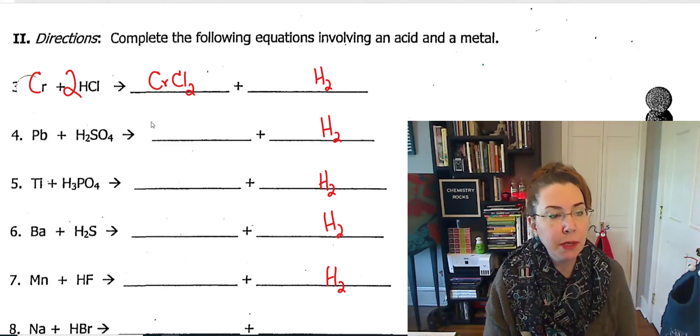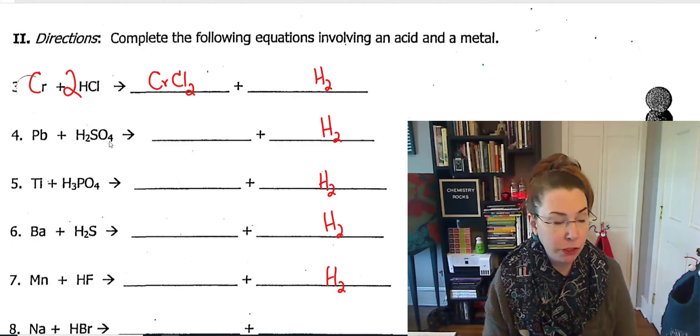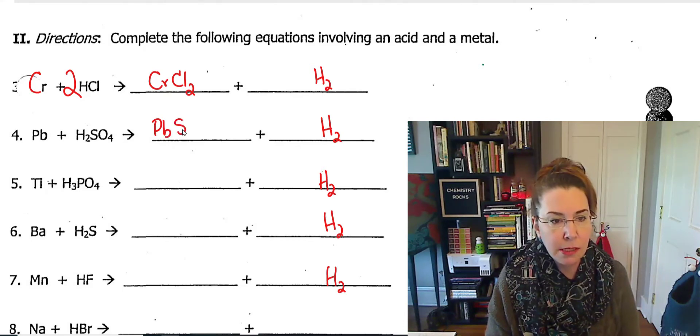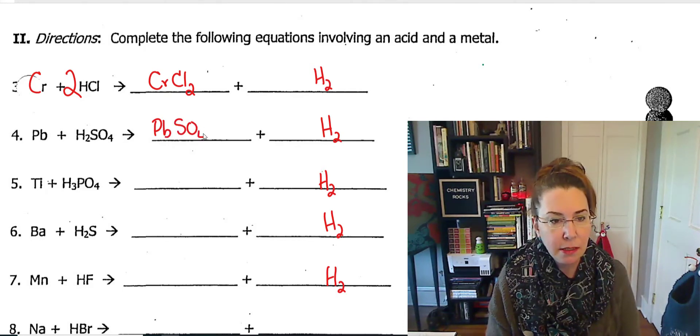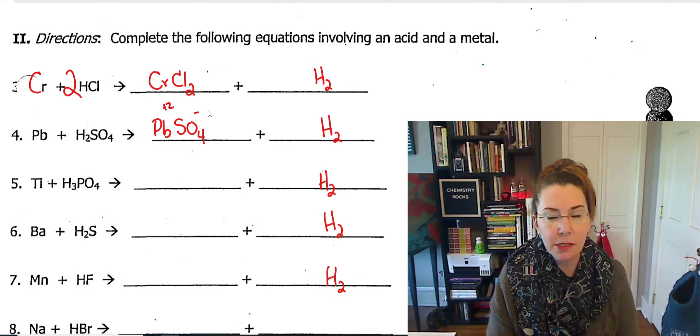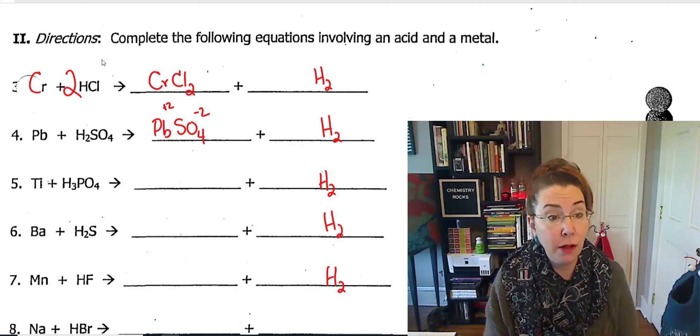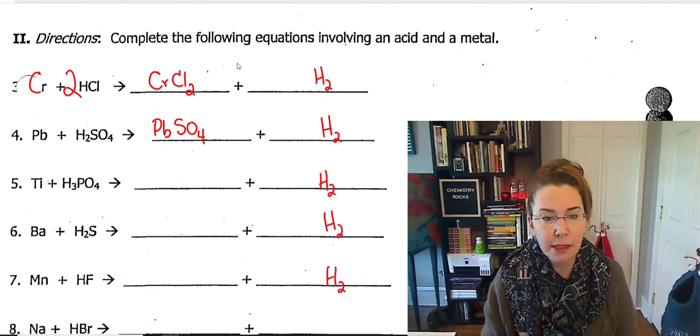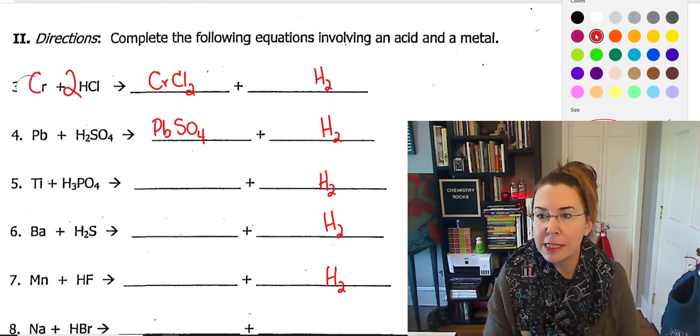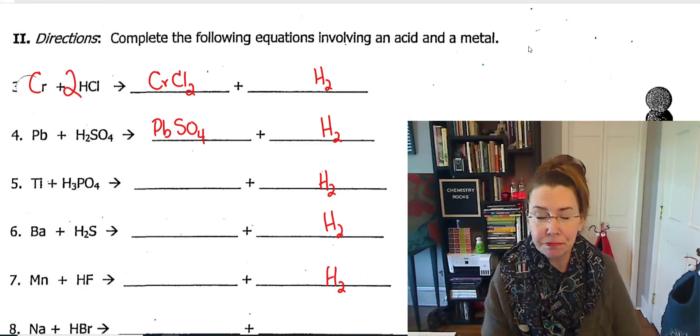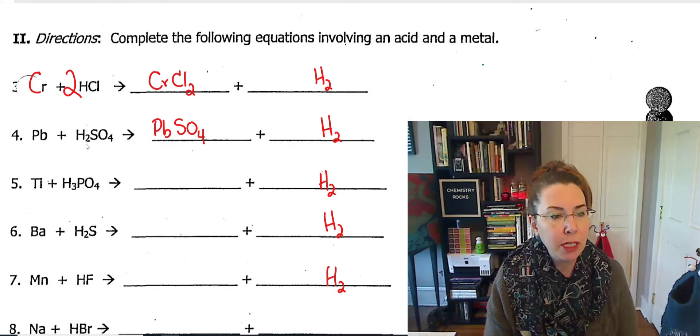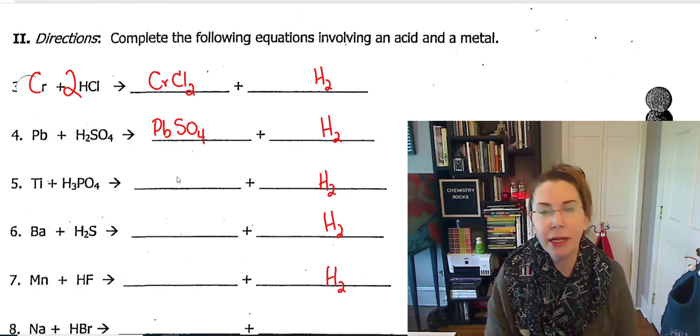Now our next one, we've got lead reacting with sulfuric acid. Lead has a charge of plus 2, so does sulfate, which means their charges will effectively cancel each other out, which means we don't need to show any subscripts there. Because our hydrogen gas always needs to be diatomic, we've already shown that here. We've got 2 hydrogens on this side. Everything is balanced here in question 4.